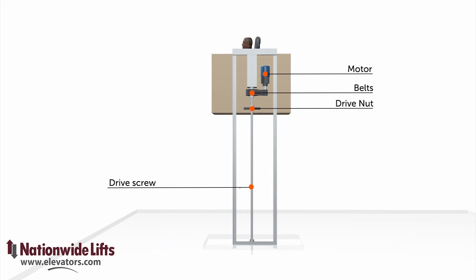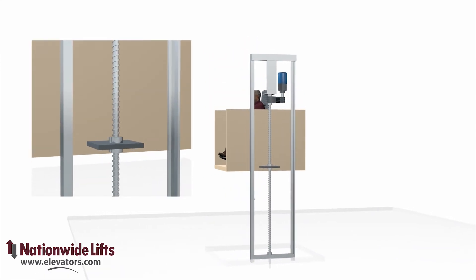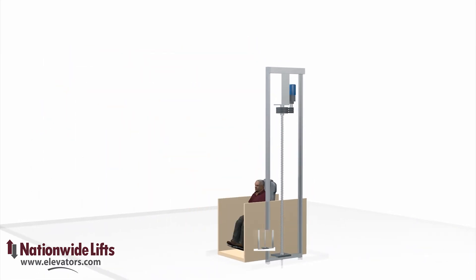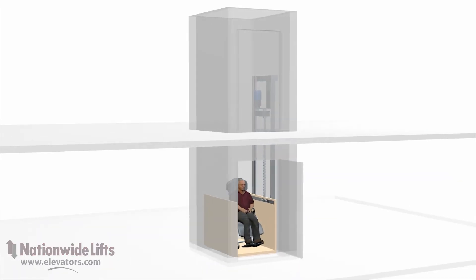A shallow pit or ramp is required for this wheelchair lift. The screw drive wheelchair lift is considered machine roomless. The controller and motor unit are located in the hoistway, eliminating the need for a separate machine room closet.